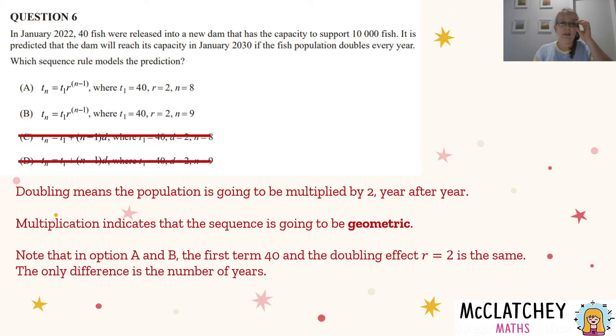Now we need to have a look at the difference between option A and option B. We notice T1, the number of fish is 40, and that's the same for both of them. So that doesn't help us. The common ratio R is the same for both. It's two. So the only difference is the number of years and this is where it gets a little tricky.